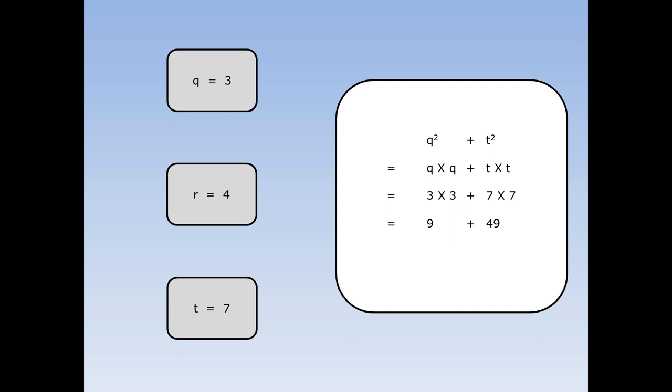3 times 3 is 9. 7 times 7 is 49. 9 plus 49 is 58. So q squared plus t squared equals 58.